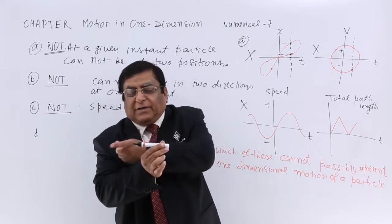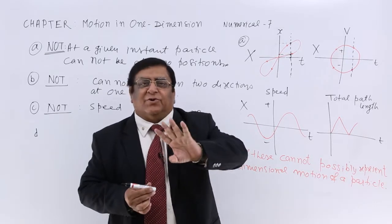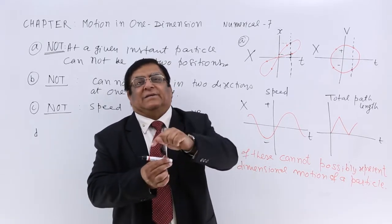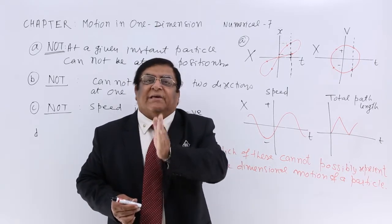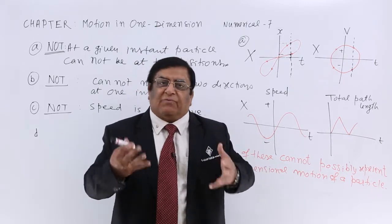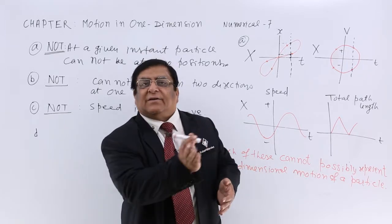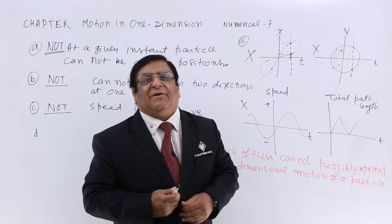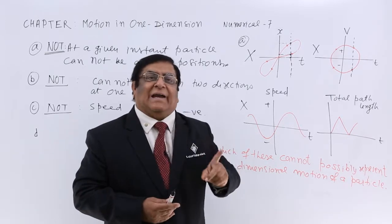The path length is 200 plus 50. It cannot be 200 minus 50 because it is not displacement. It is the path length, that is distance. So path length always keeps on adding up because we are walking, whether in the opposite direction. Displacement may be less or more, but path length is never deducted. It is always added up.